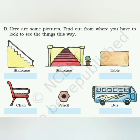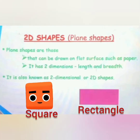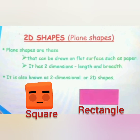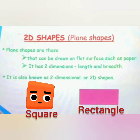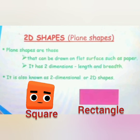Now do the rest of these questions yourself. Now let's move to another topic: 2D shapes, or plane shapes. Plane shapes are those that can be drawn on a flat surface such as paper. They have two dimensions — length and breadth — and are also known as two-dimensional or 2D shapes, where D stands for dimension.